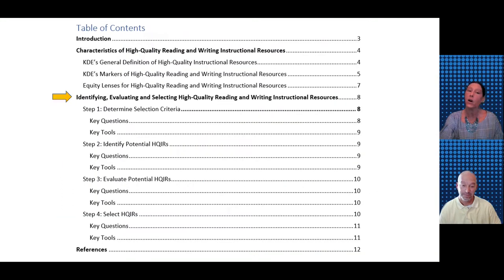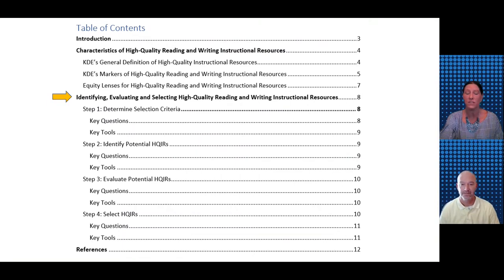As the table of contents shows, for each step of the process the consumer guide includes a brief description of the purpose of the step, key questions the committee should consider as they engage in that step, and key tools to support the work.